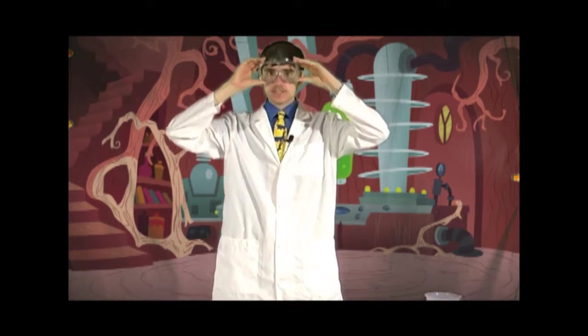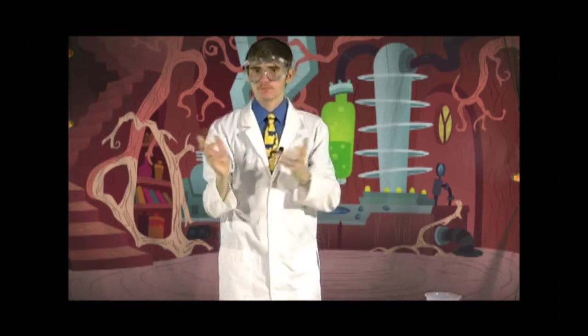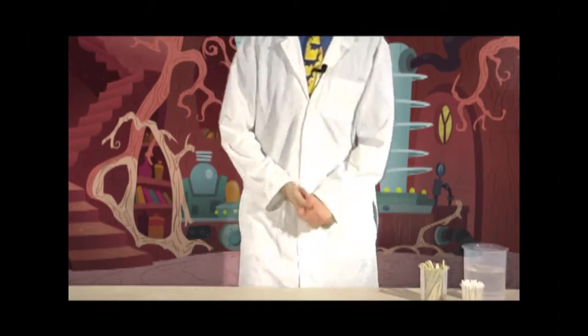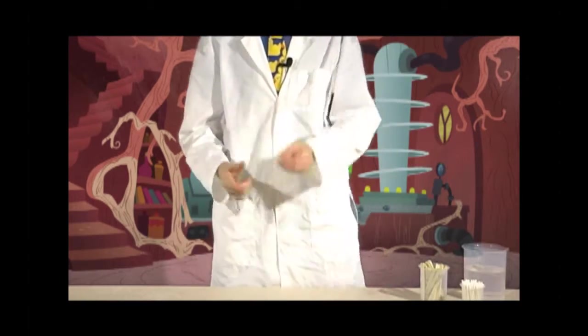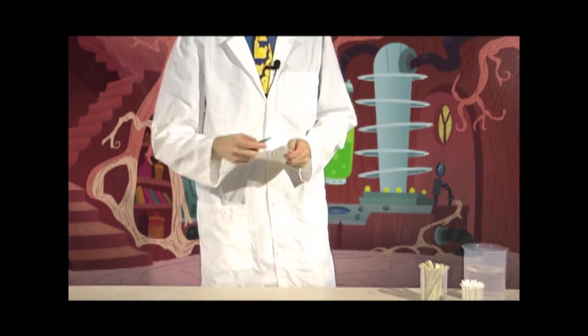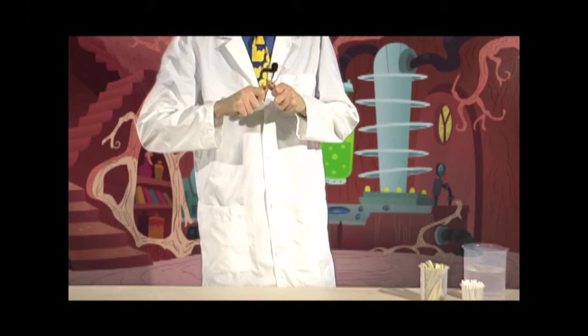So, let's do some science, or bow and arrowing, one of the two. Alright, let's get started. The first thing you want to do is take your popsicle stick and your knife. And you're just going to want to cut notches in it.